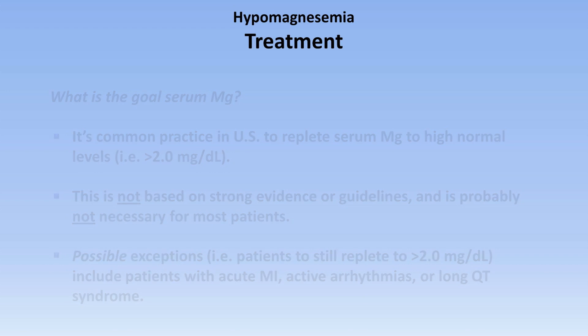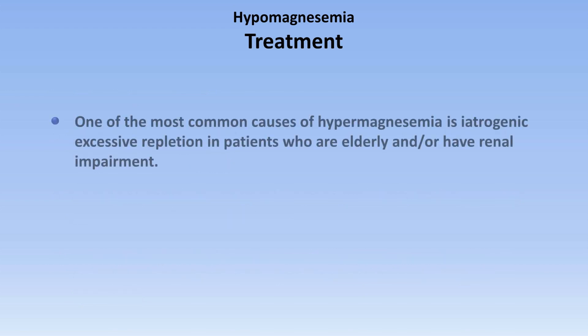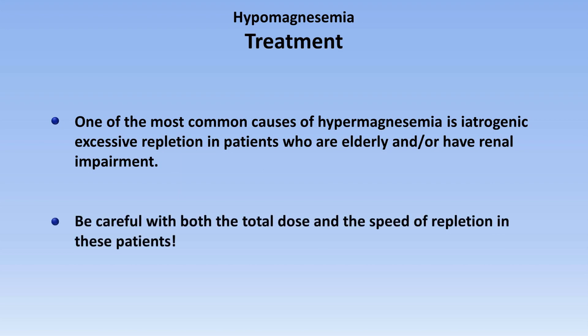Please remember that one of the most common causes of hypermagnesemia is iatrogenic excessive repletion in patients who are either elderly and/or have renal impairment. So please be careful with both the total dose and the rate of repletion in these patients.